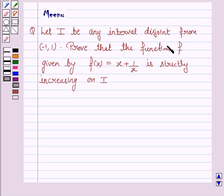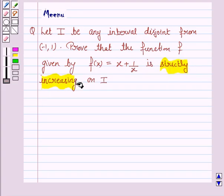It says that I be any interval disjoint from (-1, 1). Prove that the function f given by f(x) = x + 1/x is strictly increasing on I.